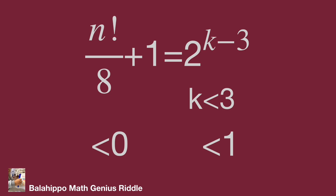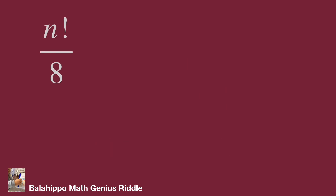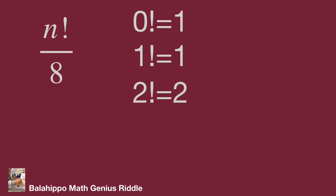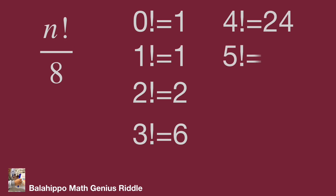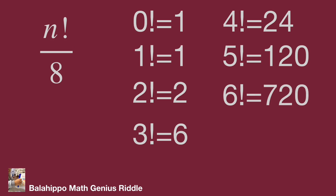For n factorial over 8, we have two conditions: it must be an integer, and it must be an odd number. Let's calculate factorial values: 0!=1, 1!=1, 2!=2, 3!=6, 4!=24, 5!=120, and 6!=720.